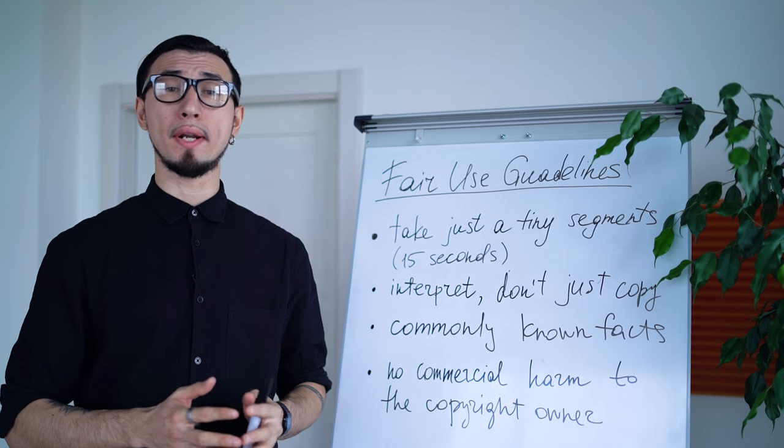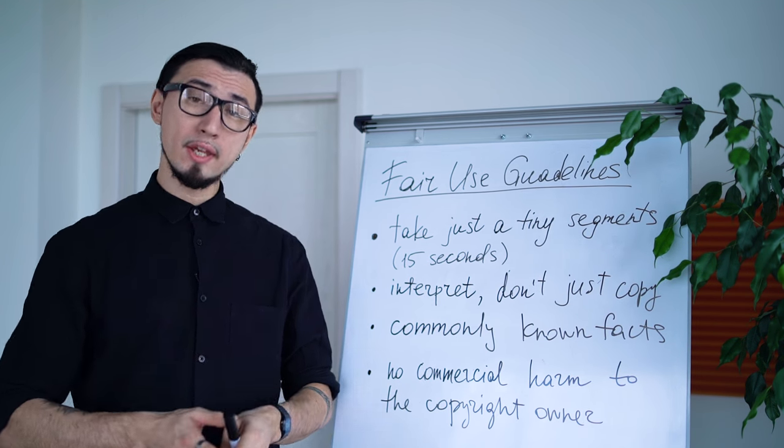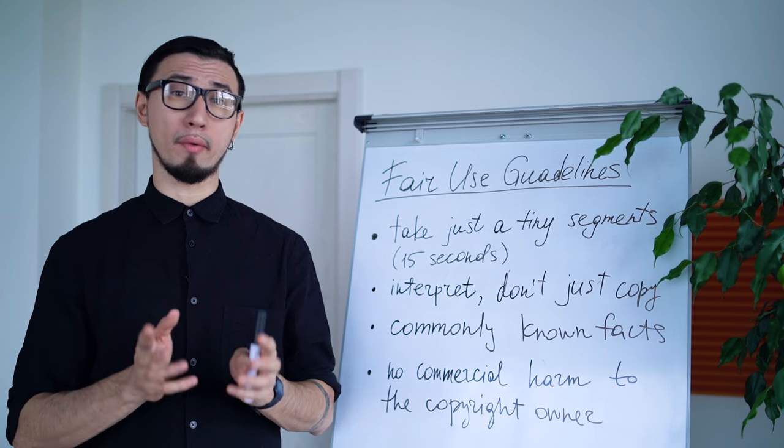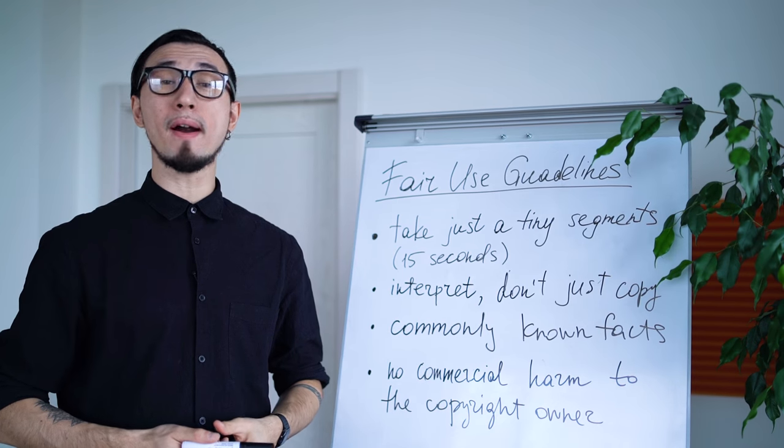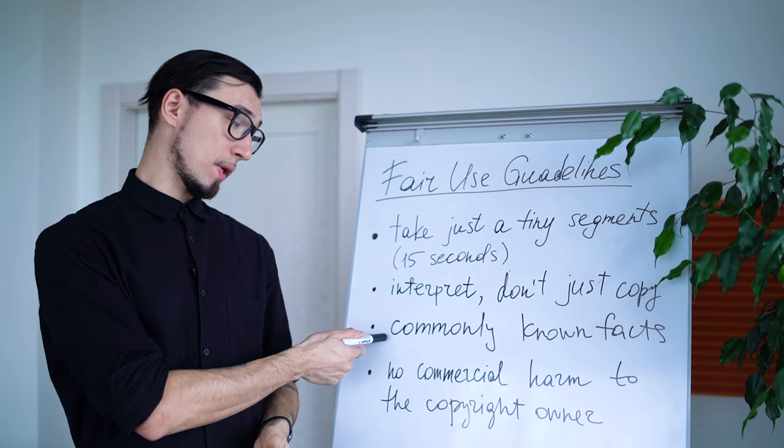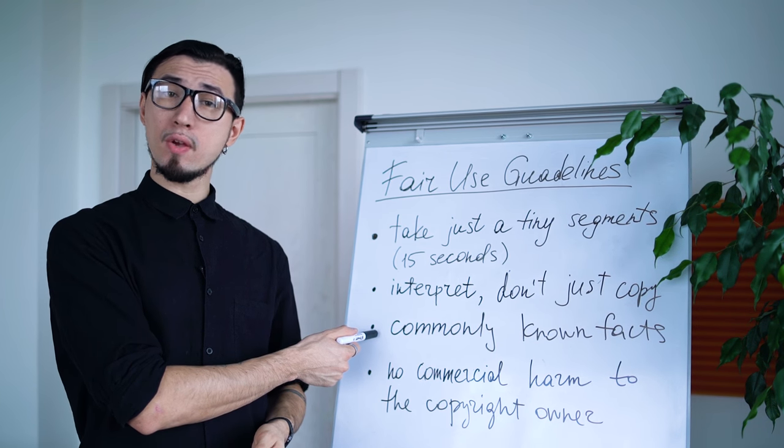Secondly, you must interpret — not just copy. Your work must be transformative. This means that if you insert a part of someone else's work into your own, you must add your own commentary or create a video mashup, for instance. Thirdly, you can use parts of videos based on factual works. This is generally about news and scientific videos — for example, an educational piece about a meerkat family or news about Prince Harry's wedding. These are commonly known facts with no fictional element.